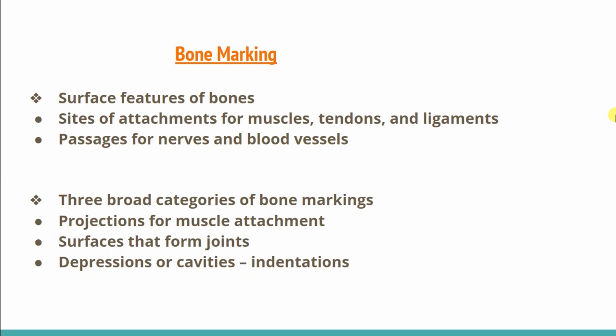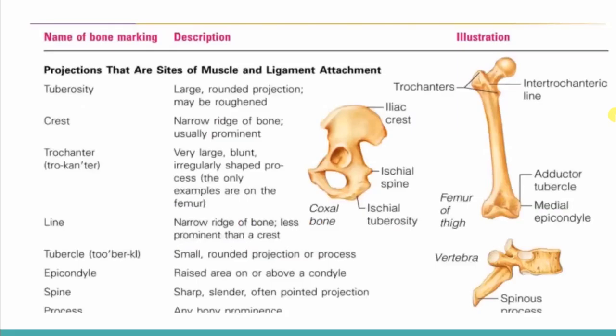The three broad categories are: projections for muscle attachment — where the muscle will attach; surfaces that form joints; and depressions or cavities. You can see this in the chart. First, we have projections that are the site of muscle and ligament attachment — this is where other muscles and ligaments are attached.